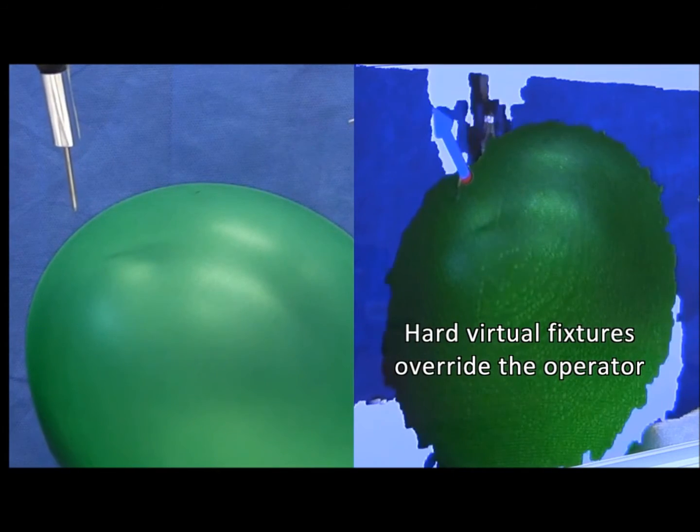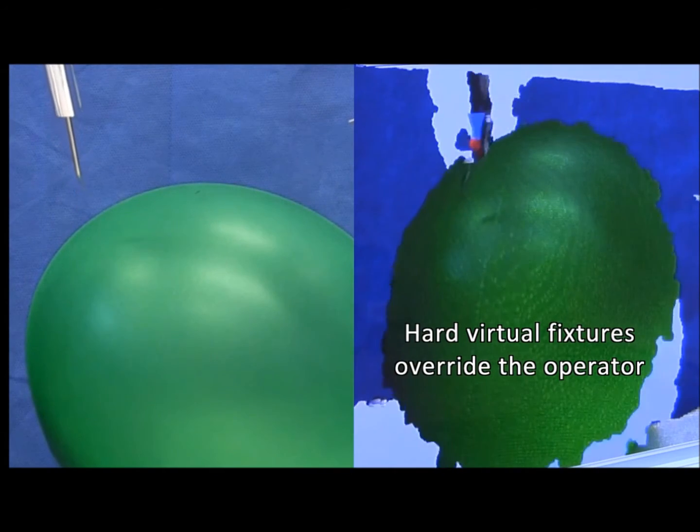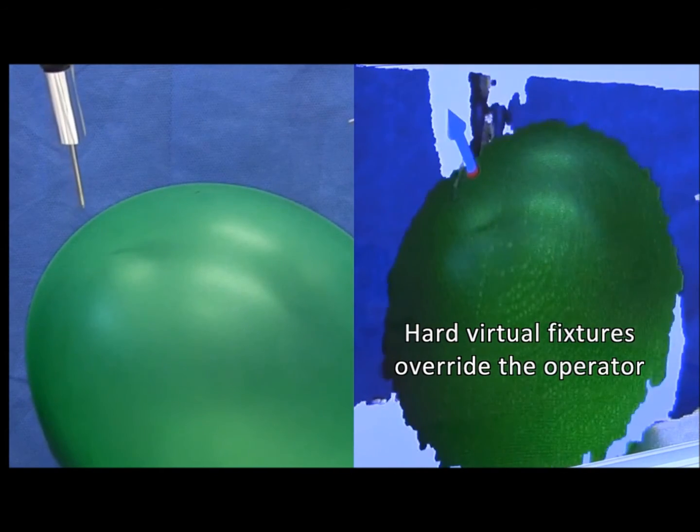In a hard virtual fixture, the end effector is kept from touching the balloon and the robot is locked out as we see here.